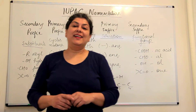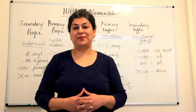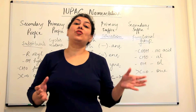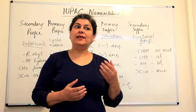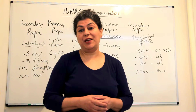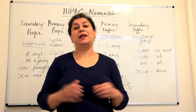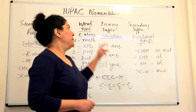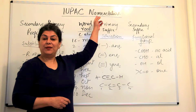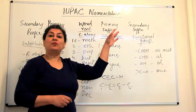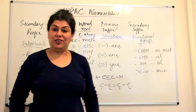Let's study about the nomenclature of hydrocarbons. We know there are millions of organic compounds in the world and it's not possible to learn the trivial names of each and every organic compound. Hence a system of naming these organic compounds has been devised by the International Union of Pure and Applied Chemistry — this system is known as the IUPAC nomenclature.